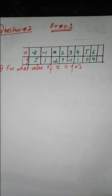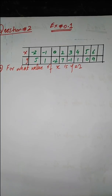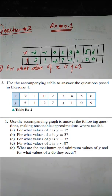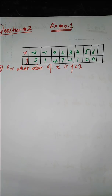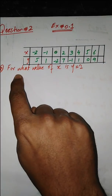Hi dear students, in this video I am solving question number two of exercise 0.1 from the book Calculus by Howard, 10th edition. In question two, the statement says to use the accompanying table to answer the questions posed in exercise one. I already solved exercise one in my previous video using a graph, and now I have to use this table.